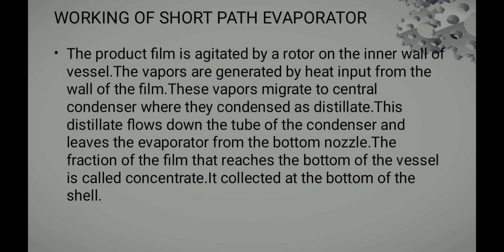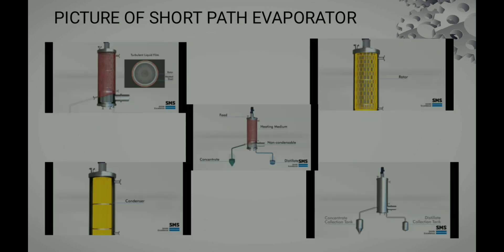Let us see the working of the short path evaporator. The product film is agitated by a rotator on the inner wall of the vessel. The vapor generated by heat input from the wall of the film migrates to the center condenser where it condenses as a distillate. This distillate falls down to the tube of the condenser and leaves the evaporator from the bottom nozzle. The fraction of the film that reaches the bottom of the vessel is called the concentrate, and it is collected at the bottom of the shell.